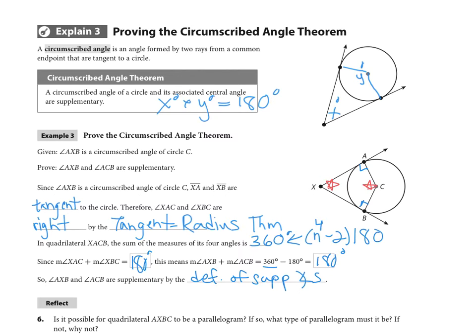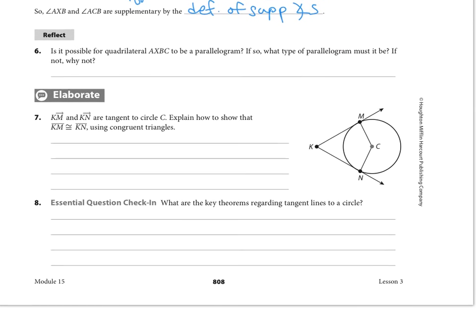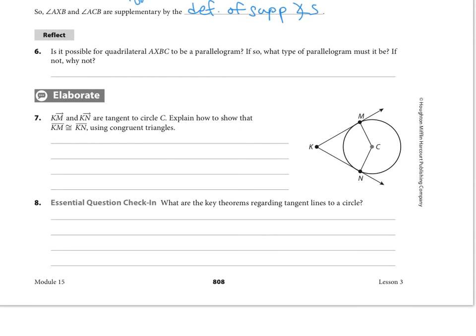So not only can we prove that theorem, but also if we look down at the Elaborate a little further down the page here, the Elaborate number 7 is asking us to explain how to show that KM is congruent to KN—in other words, these outside pieces right here, the outside tangent pieces are congruent. That's the question we're being asked to prove.